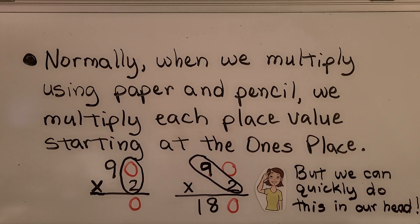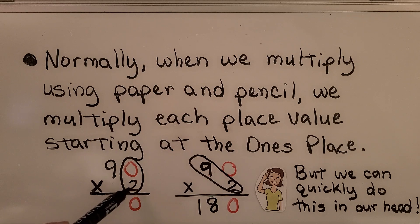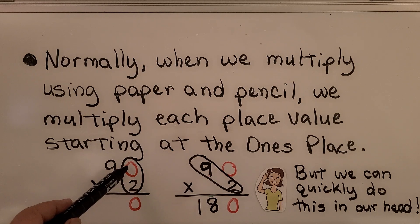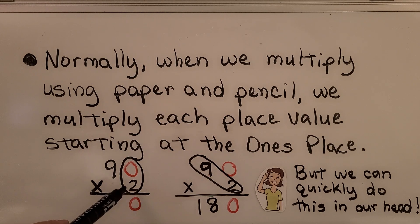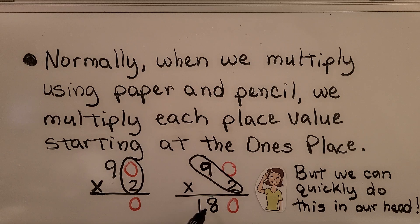Normally, when we multiply using paper and pencil, we multiply each place value starting at the ones place. If we have 90 times 2, we do 0 times 2, which is 0, and then 2 times 9, which is 18, and we have 180.